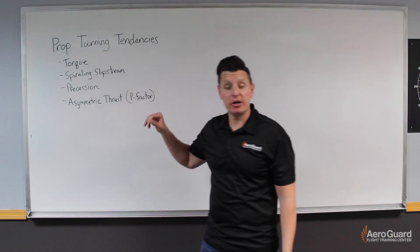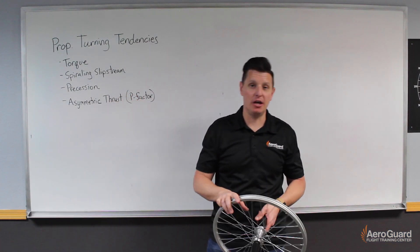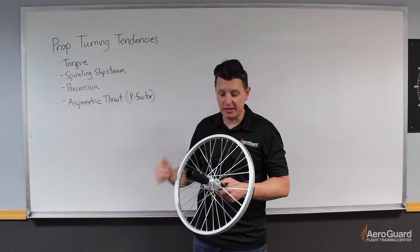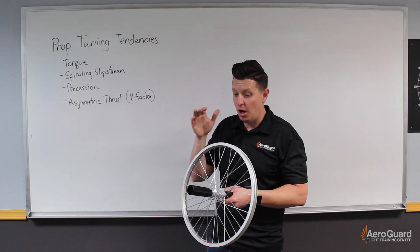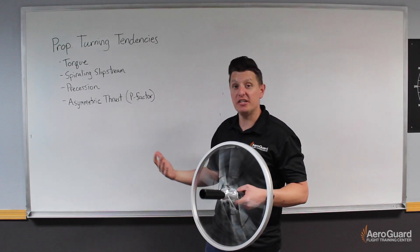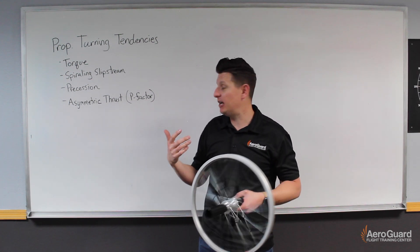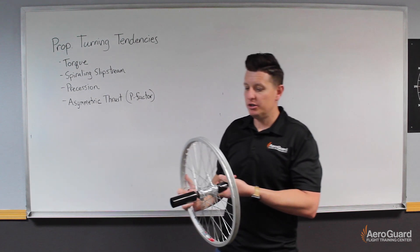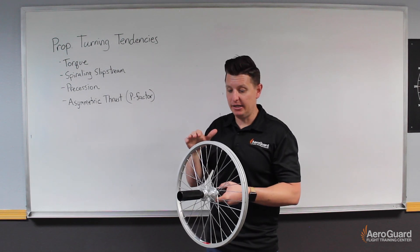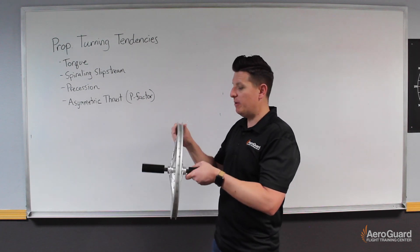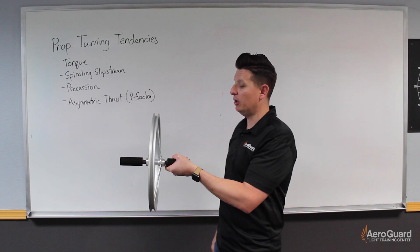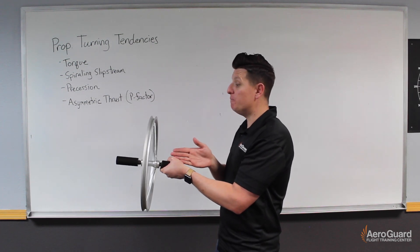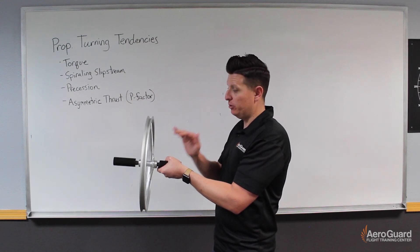The next turning tendency we're going to talk about is precession, and this is the same as the normal gyroscopic precession we've talked about before. A propeller, while it's rotating, is for all intents and purposes acting exactly like any other gyroscope. I'm going to use this bicycle wheel here to simulate exactly how that would work. If we imagine that I'm sitting in the airplane right now, here's the propeller rotating in front of me. Any time I make a change to pitch, I'm going to apply a force to this propeller.